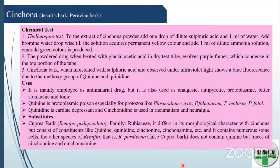Cinchona is mainly employed as an antimalarial drug but also used as an antipyretic, analgesic, and tonic. Quinine is a protoplasmic poison especially for protozoa — Plasmodium vivax, falciparum, malariae, and ovale. Quinidine is a cardiac depressant used as an antiarrhythmic drug. Cinchonidine is used in rheumatism and neuralgia. Adulterants include Remijia pedunculata and Remijia purdiana — false cuprea bark.